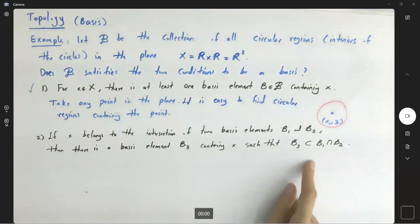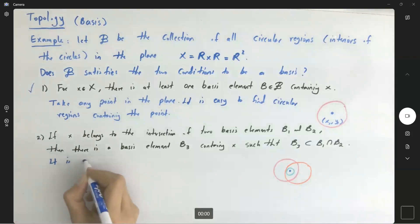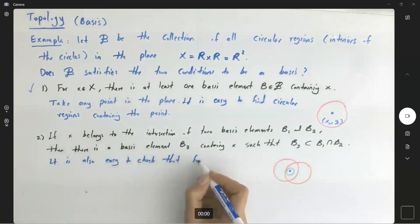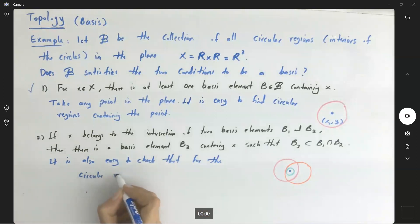So this is also easy to see. Again, if you have a point in the intersection of two circular regions, the first circular region and then the second circular region, then definitely we can find another circular region including that point, and it's included in the intersection of these two circular regions.